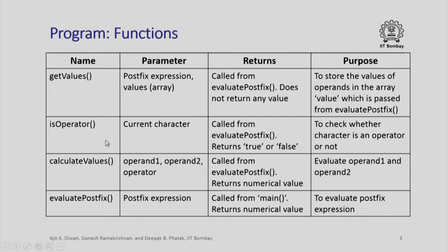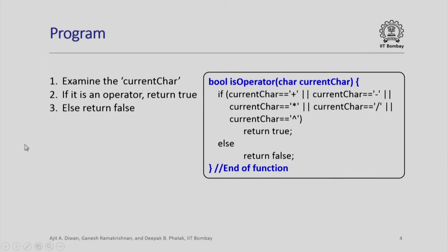Let us look at the is_operator function. Its objective is to examine the current character — if it is an operator, return true; otherwise return false. Our operators for the current example are plus, minus, star, slash, and raised-to. If the current character is any one of these, it returns true; otherwise it returns false. Simple logic.